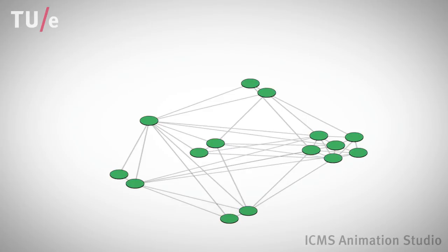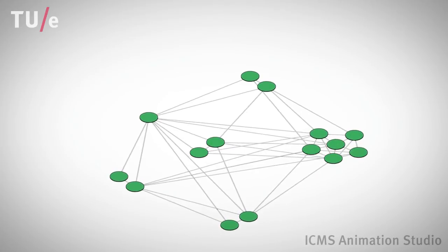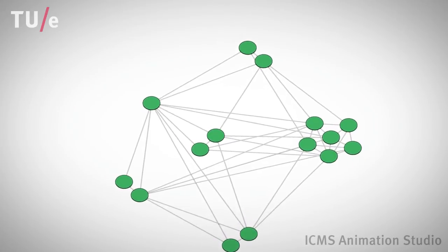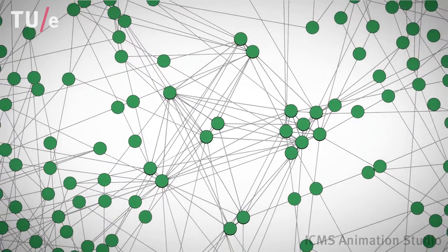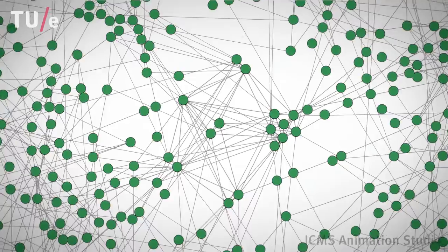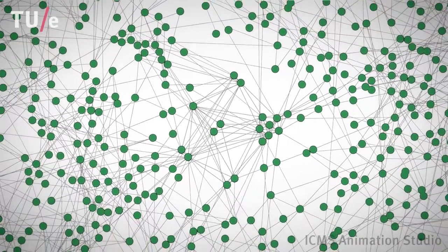Of course, the small network is part of a much larger, complex network describing the relations between all people or the cables between all routers worldwide. Network theory studies the properties of such networks.